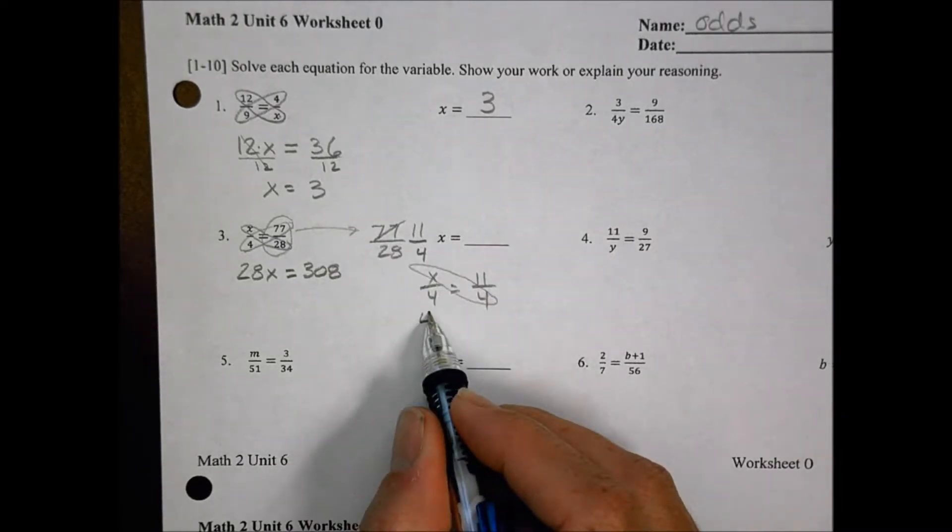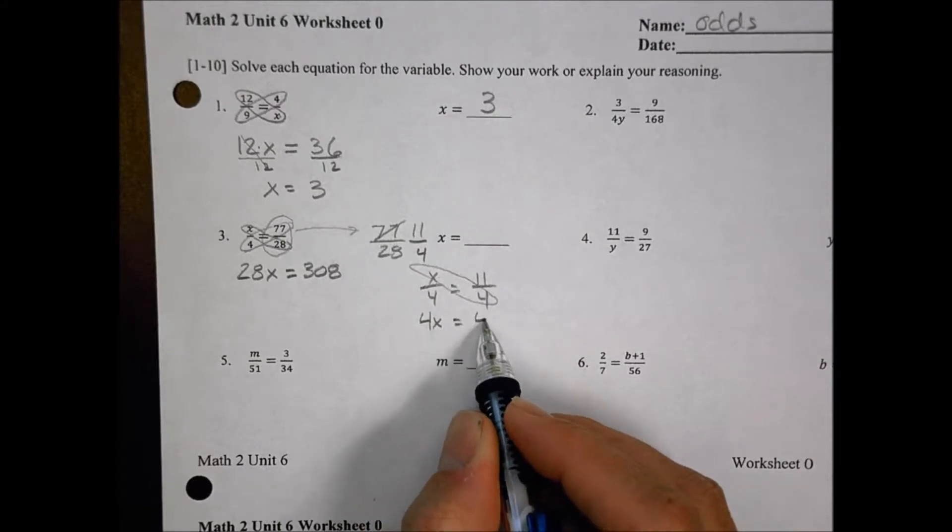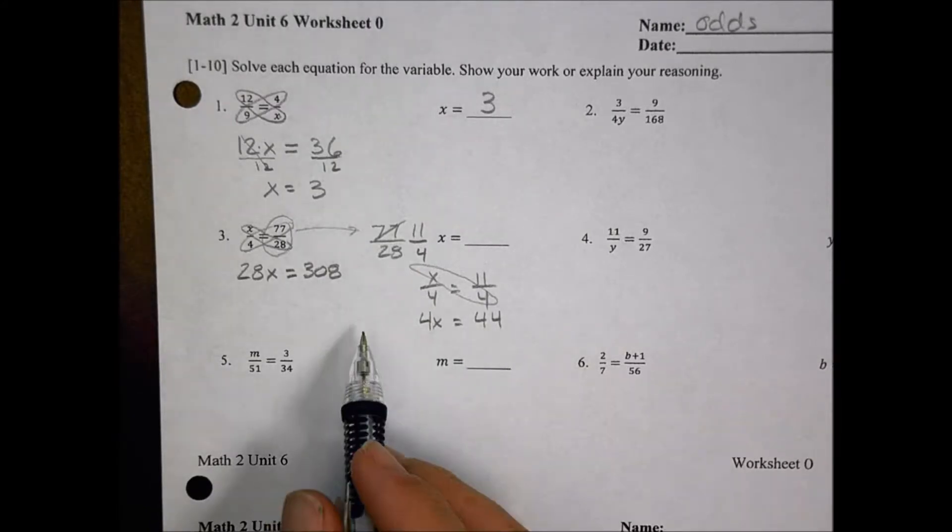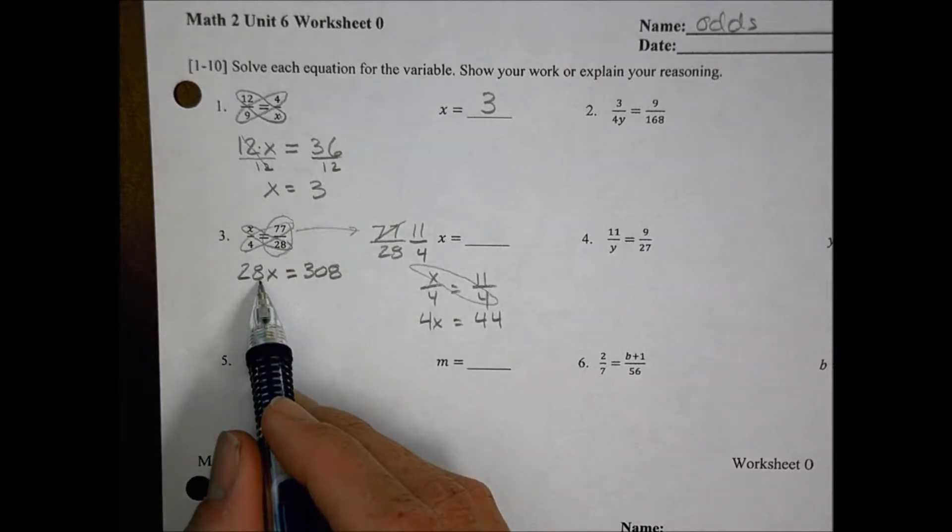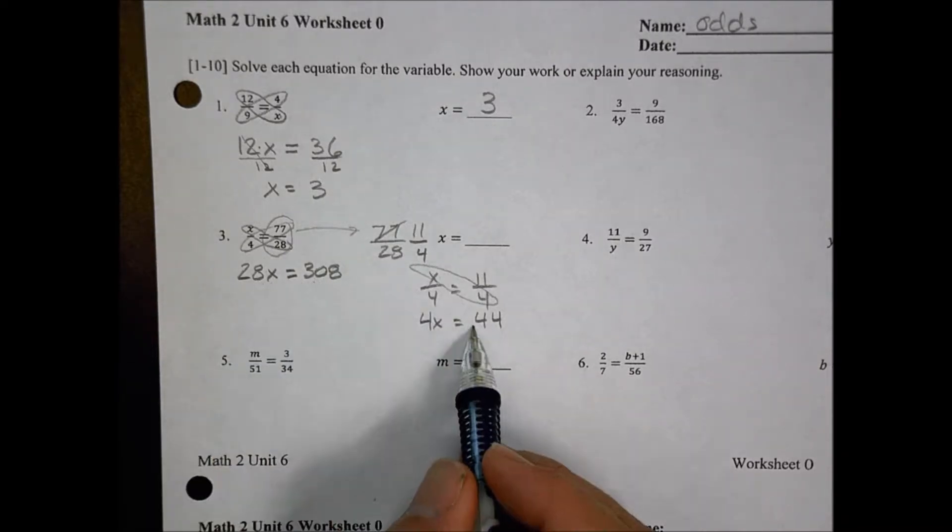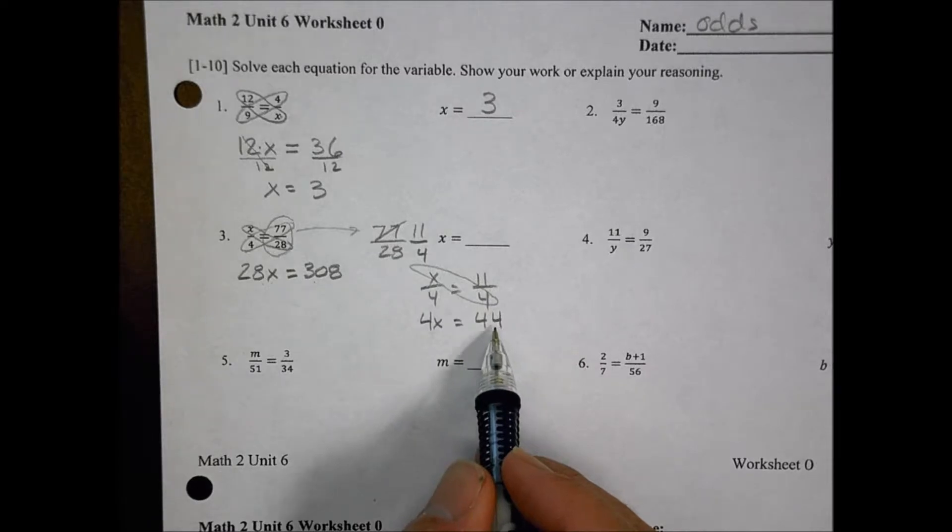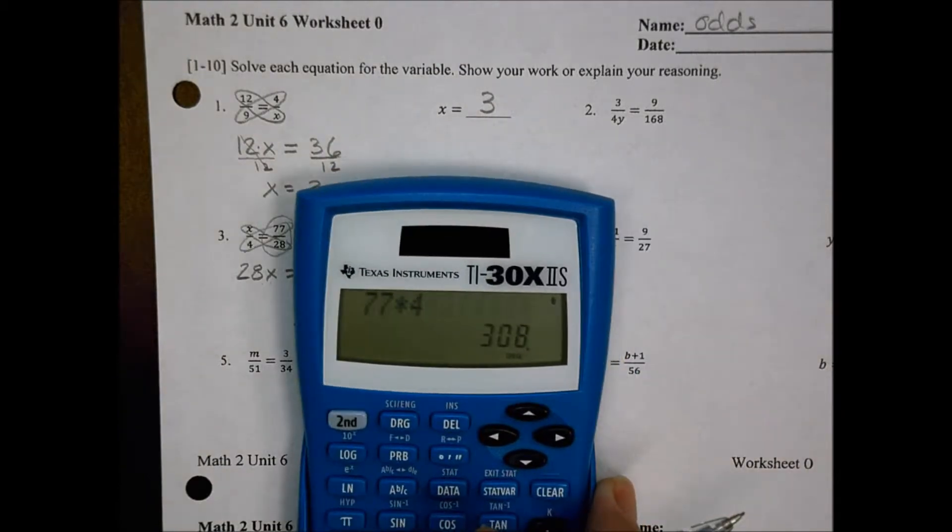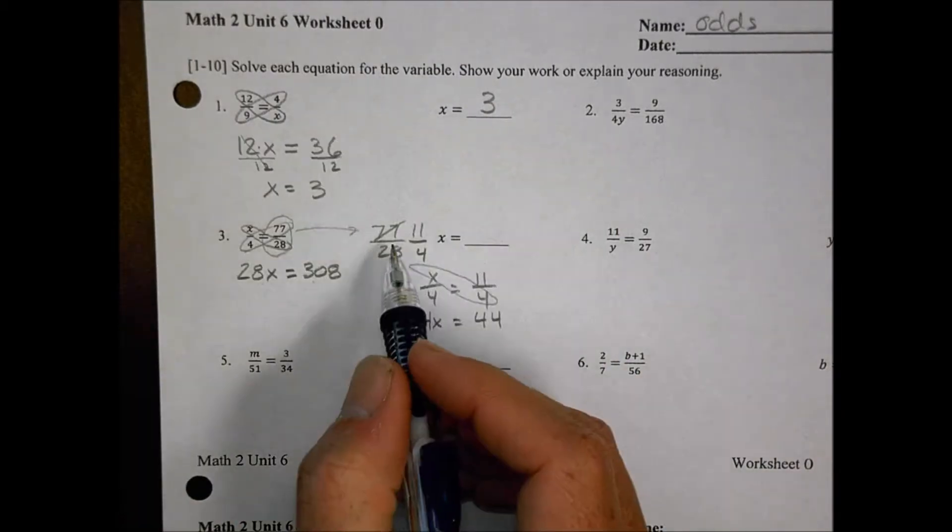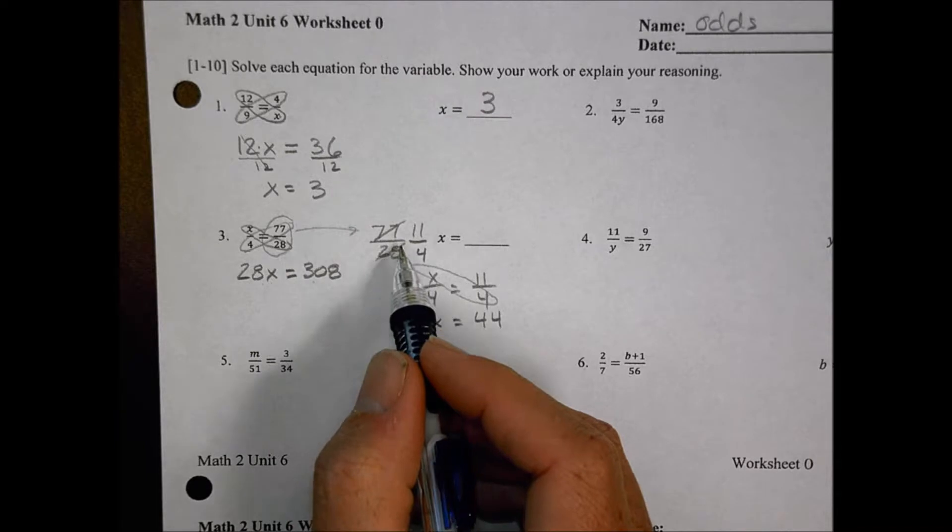When I cross multiply, I have 4 times x, or 4x, equals 44. So both of these problems so far, we're at the same exact point, but now I'm doing, over here I have 28x equals 308, here I have 4x equals 44. This is a lot easier for me to solve, and I haven't had to get out a calculator to figure out what 4 times 77 is going to be, right? So look for a way that you can reduce.